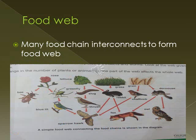Food web. Many food chains interconnect to form a food web, because most animals feed on more than one kind of organism. For example, a cat does not eat mice only — it also eats little birds.